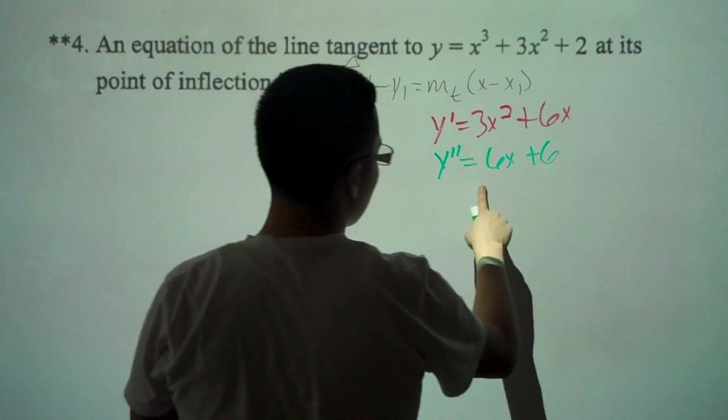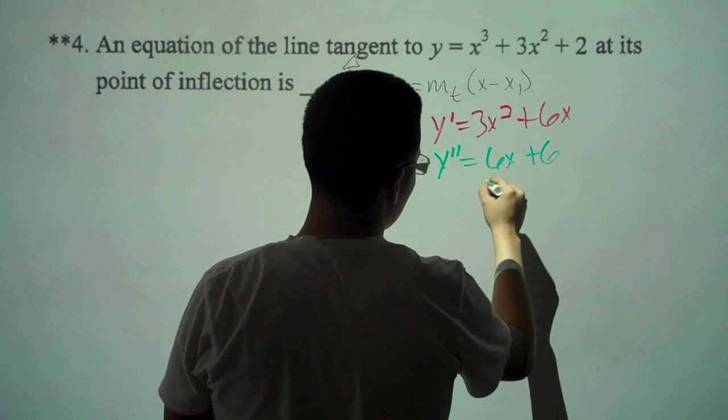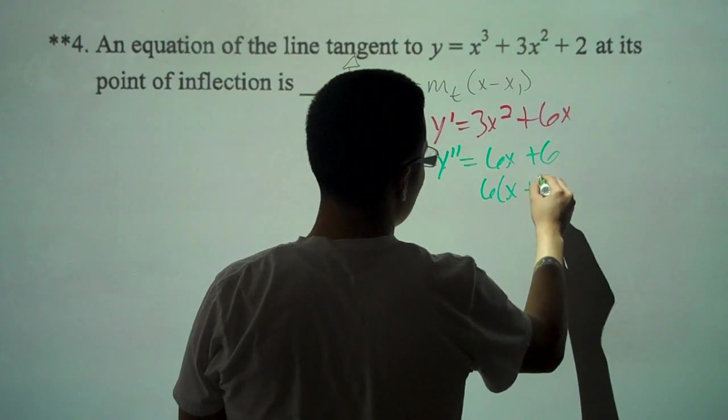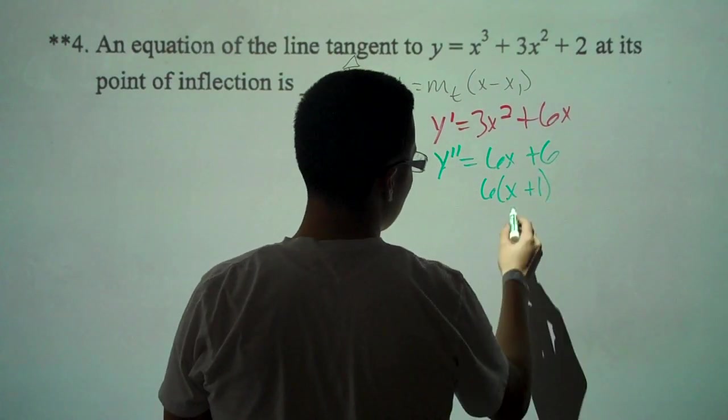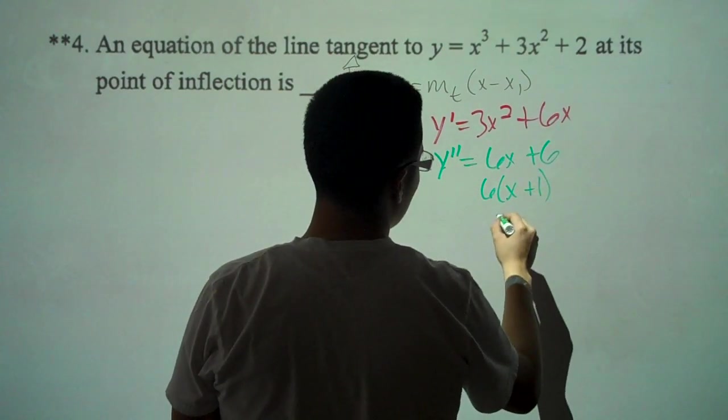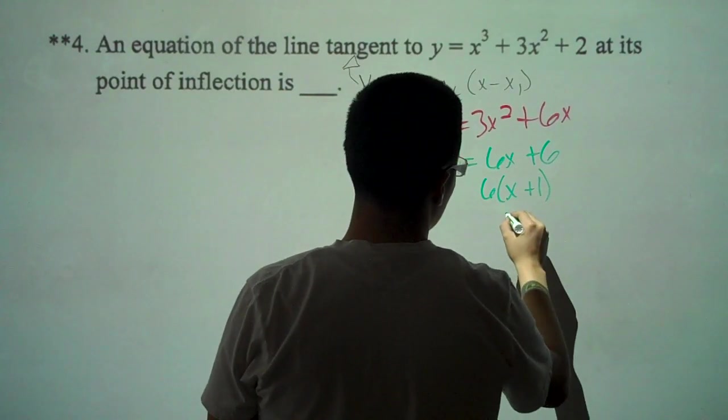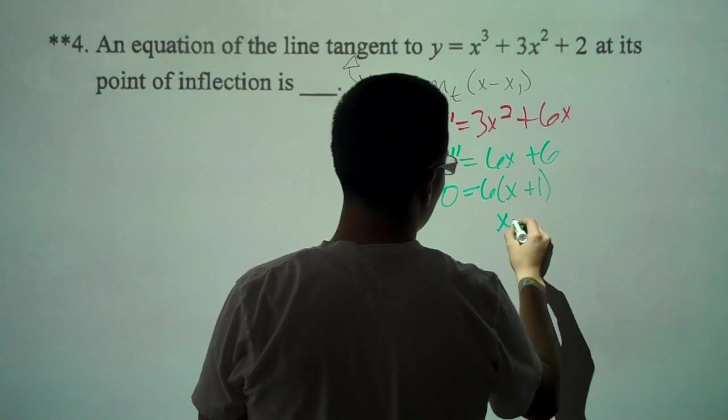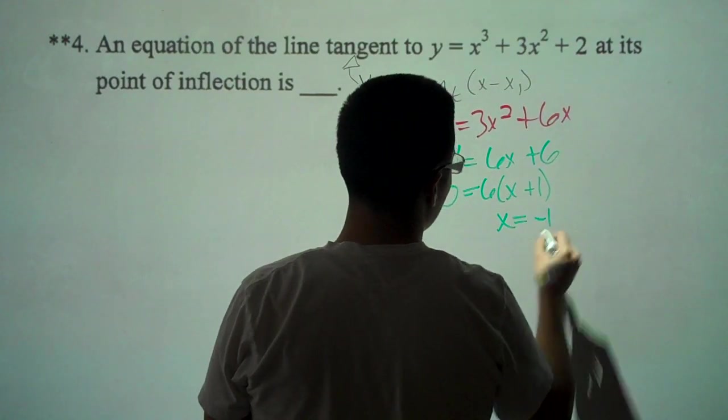In this equation, we can factor out a 6 right here: 6 times x plus 1. We set this equal to 0. Our x is going to be negative 1.